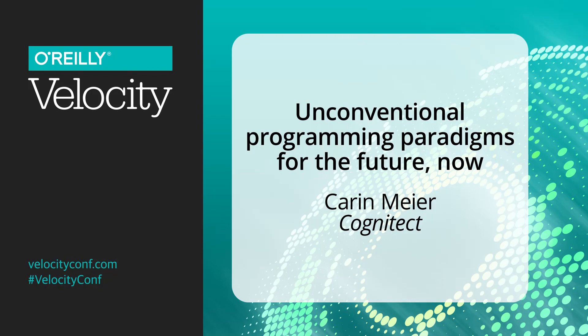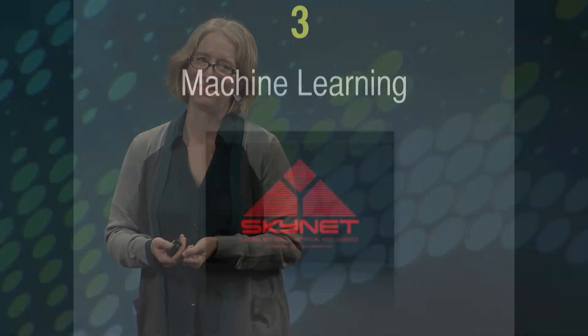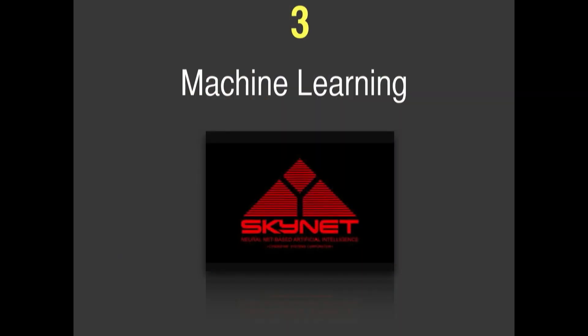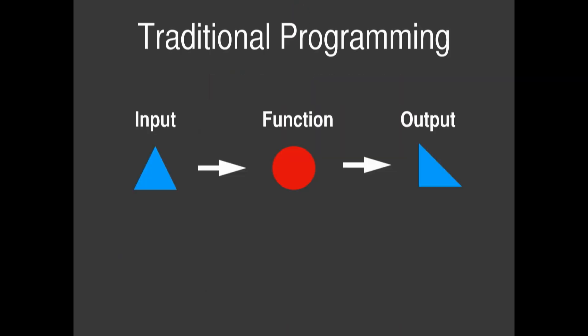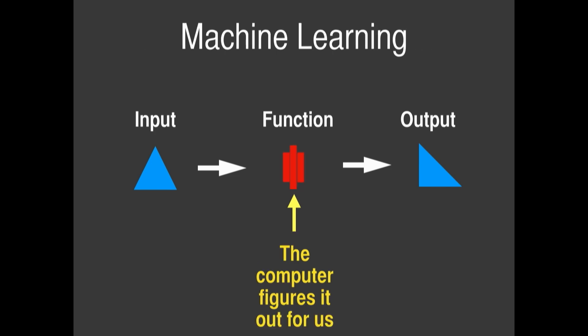The third unconventional programming paradigm is machine learning, and we're actually becoming quite common with this right now. But in traditional programming, as we all know, you have an input, an output, and a function — and the function is the bit that we code up. But machine learning changes this: we're letting the computer figure out this middle bit. We're turning over control to the machine.